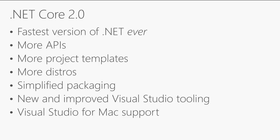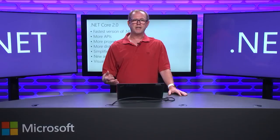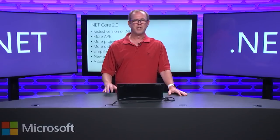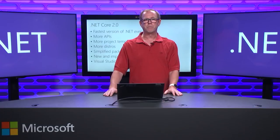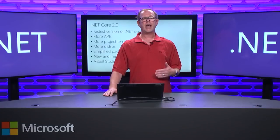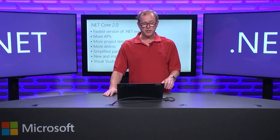More APIs. One of the biggest pieces of feedback we got on .NET Core 1.0 was that a lot of favorite APIs — the old .NET APIs people are used to, things like datasets — are not there. They're all back. We also have a bunch of new project templates. Now if you want to build an Angular app with ASP.NET Core, or a React app with ASP.NET Core, those are all in the product.